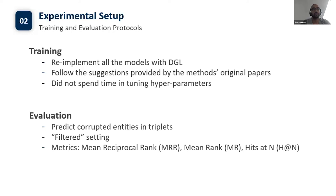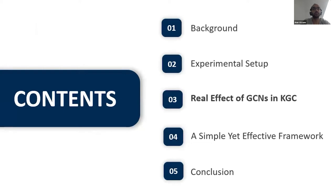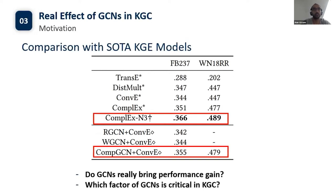For evaluation, we predict corrupted entities in triplets and use the filtered setting that does not take existing valid triplets into account at ranking. We use mean rank, mean reciprocal rank, and Hits@N as evaluation metrics. Lower MR and higher MRR or H@N indicate better performance. Using this experimental setup, we explore the real effect of GCNs in KGC. As shown in the table, GCN-based KGC models do not show a great advantage over state-of-the-art KGE models, though introducing additional computational complexity. This raises a natural question: what is the real effect of GCNs in the KGC task? We decompose it into two sub-questions: Do GCNs really bring performance gain? And which factor of GCNs is critical in KGC?